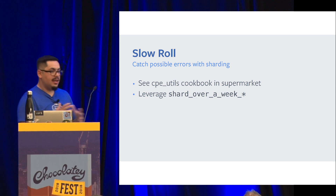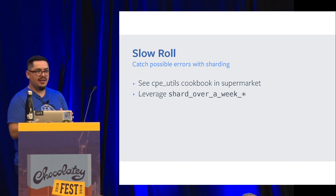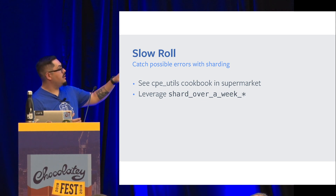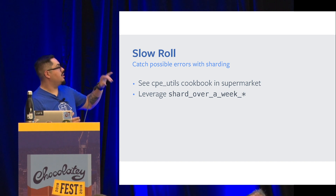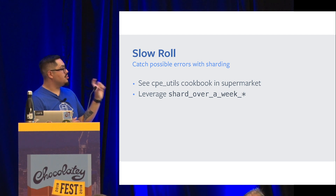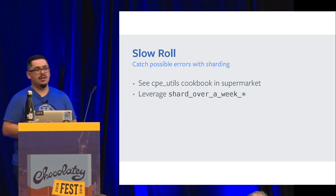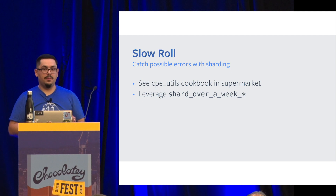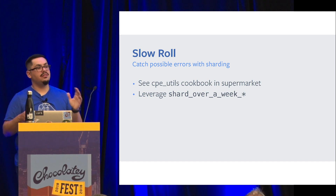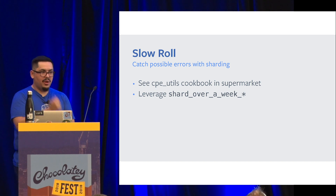So how do you catch those first hiccups, because the first iteration is never going to be perfect? By slow rolling, you can leverage a cookbook called CPUtils — it's in the supermarket — and you can leverage a function called 'shard over a week.' What that does is essentially: by Friday, you want to be at 100%. Starting Monday it rolls out to the first 10%, Tuesday is 20%, Wednesday is 50%, Thursday is 75%. That way you can say, did I break 10% of the fleet? Possibly. But it's better to catch that 10% than to roll out to the whole fleet and break everything.